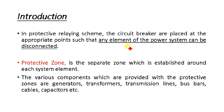In the protective relaying scheme, circuit breakers are placed at appropriate points such that any element of the power system can be disconnected. The relay's function is to isolate the faulty part from the healthy section. We arrange circuit breakers so that if there is a fault at any point, we can disconnect that faulty element from the healthy element, ensuring the other elements are not disturbed.